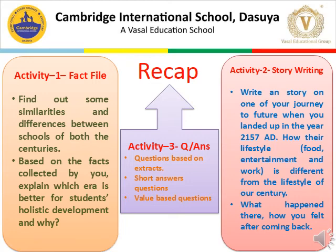The second activity was story writing. I asked you to imagine yourself as a time traveler visiting the year 2157 AD — the same year mentioned in the chapter — and find out what type of lifestyle those people have. How is it different from our lifestyle? What happened there? You had to tell us about all those things and create a story based on this.